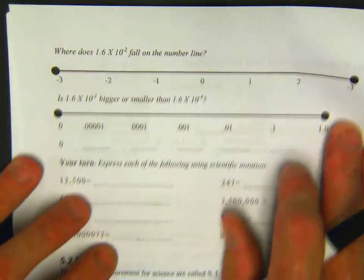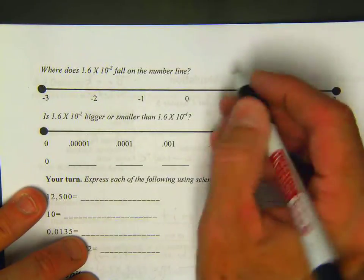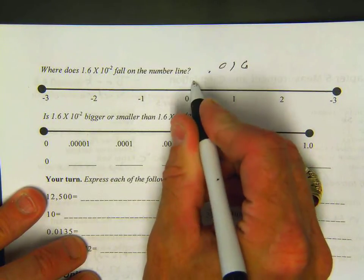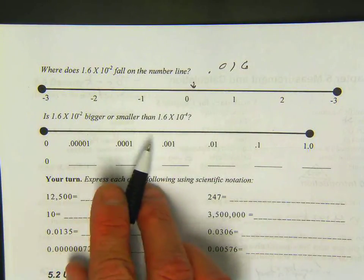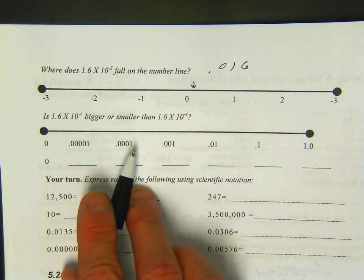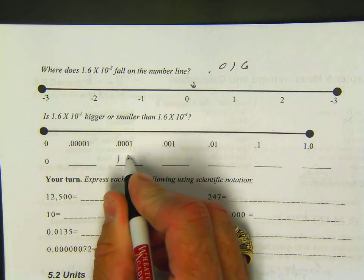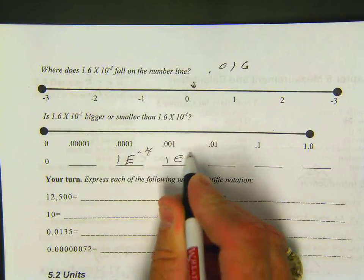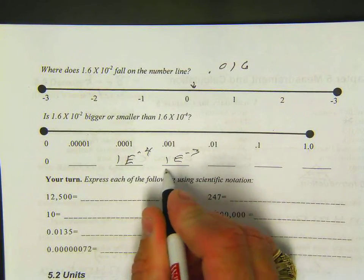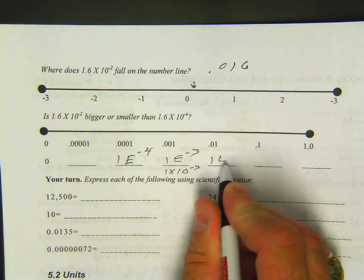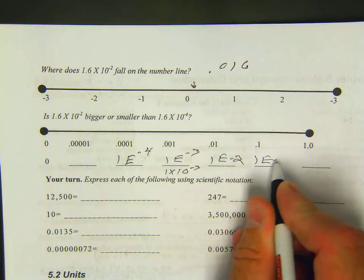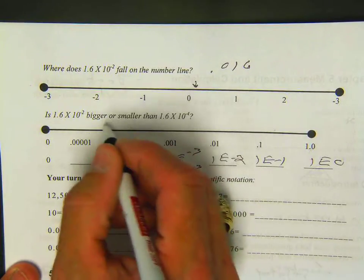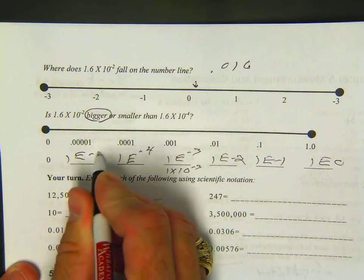Let's look at 1.6 times 10 to the minus 2. Where does this fall on the number line? Well, this would be 0.016, so it's going to be someplace in here. Is 1.6 times 10 to the negative 2 bigger or smaller than 1.6 to the minus 4? Well, 1.6 to the minus 4 would be here. I'm going to put 1e minus 4. 1e minus 3. Remember, e is exponent. This is the same thing as 1 times 10 minus 3. This would be 1e minus 2. 1e minus 1. 1e to the 0, which is anything to the 0 power is 1. So this is going to be a bigger number right here. So this is going to be 1e minus 5 over here on the left.